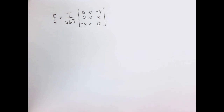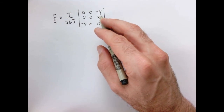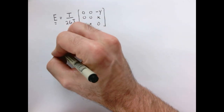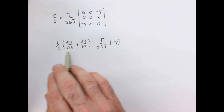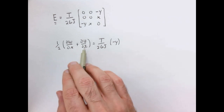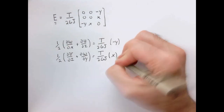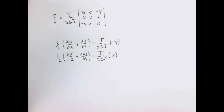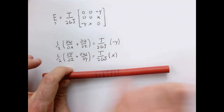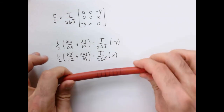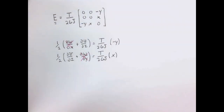Now we want to connect this infinitesimal strain tensor to the displacements. The off-diagonal terms are related to the displacements as follows: there's a factor of one-half and the derivatives of the displacements — the z displacement with respect to x and the x displacement with respect to z — equal this value. Similarly for the other term. By observation, there's no displacement in the z direction: the grid lines stay equally spaced when we apply pure torsion. So we hypothesize the z displacement w equals zero.